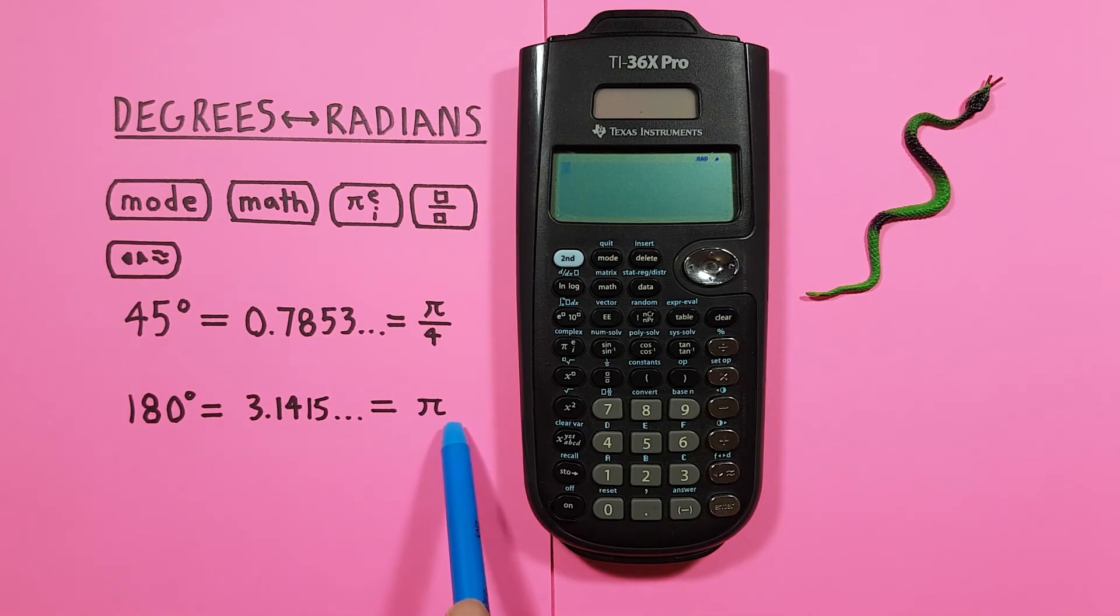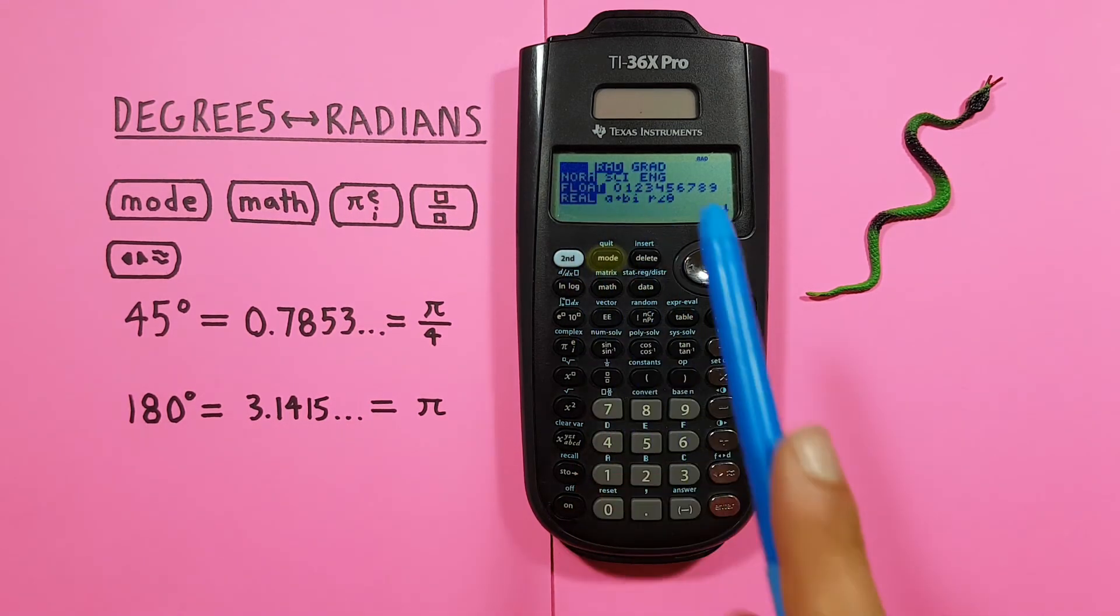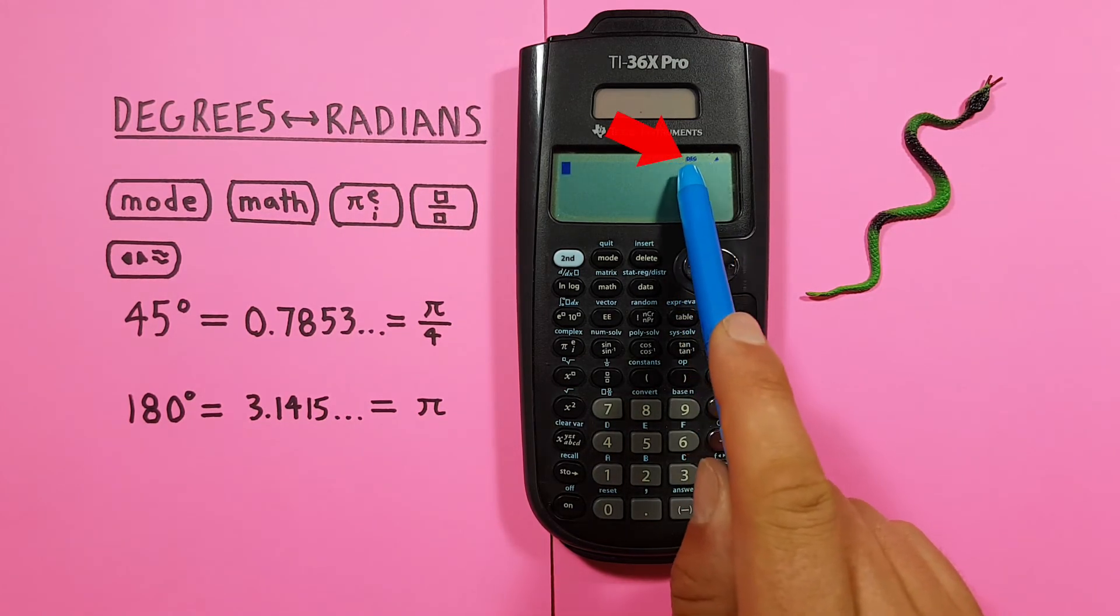And if we're given PI and want to convert that to degrees. Again we change our mode to degrees mode. So we highlight the degrees and press Enter.